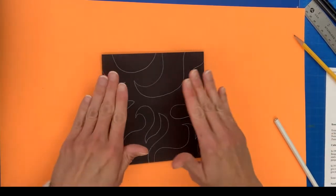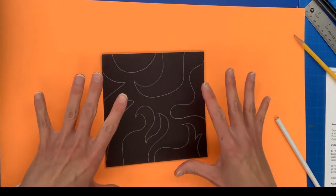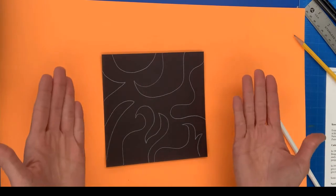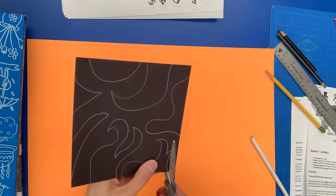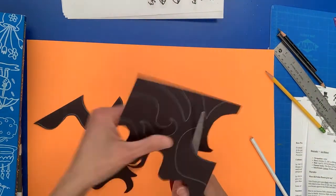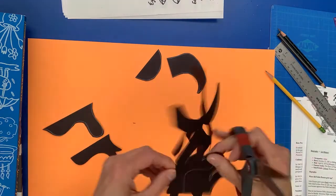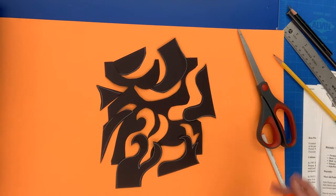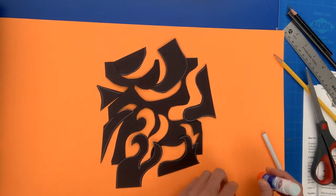Again, you want to make sure that any piece that you cut out will be able to flip back in and fit into the square. You should not have any leftover scraps from this project. Everything should be able to fit back inside that square.